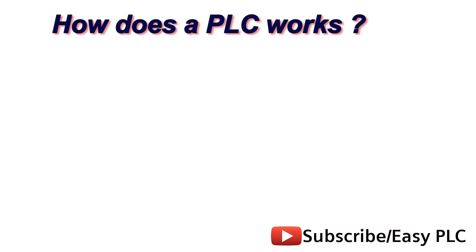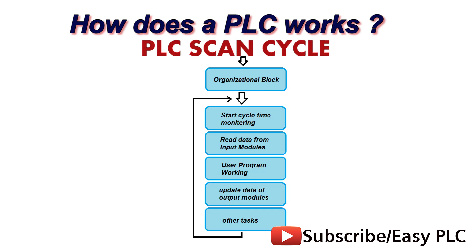How does a PLC work? The working of a PLC can be easily understood as a cyclic scanning method known as the scan cycle. A PLC scan process includes the following steps: The operating system starts cycling and monitoring of time. The CPU starts reading the data from the input module and checks the status of all the inputs. The CPU then executes the user or application program written in relay ladder logic or any other PLC programming language. Next, the CPU performs all the internal diagnosis and communication tasks. According to the program results, it writes the data into the output module so that all outputs are updated. This process continues as long as the PLC is in run mode.